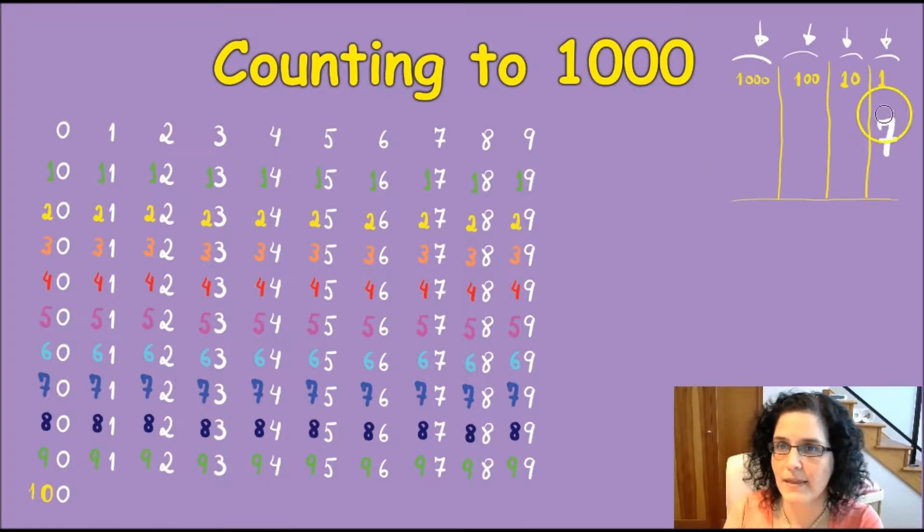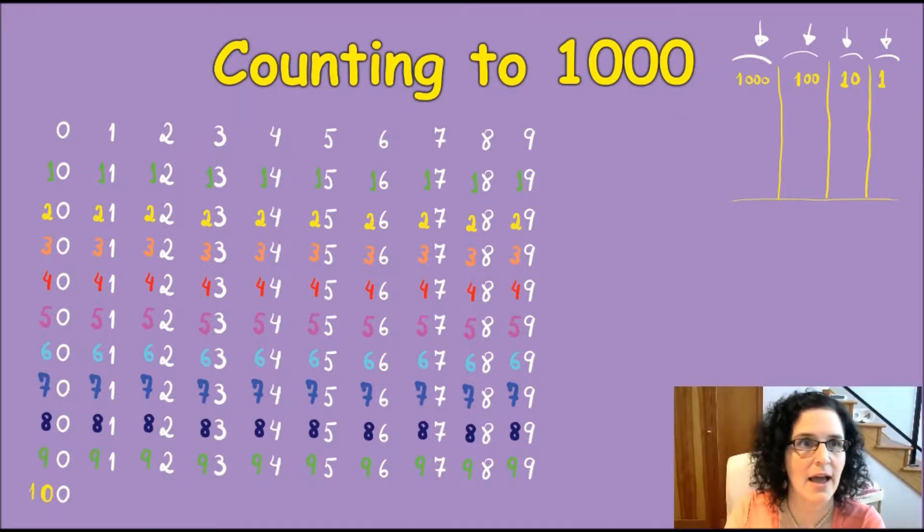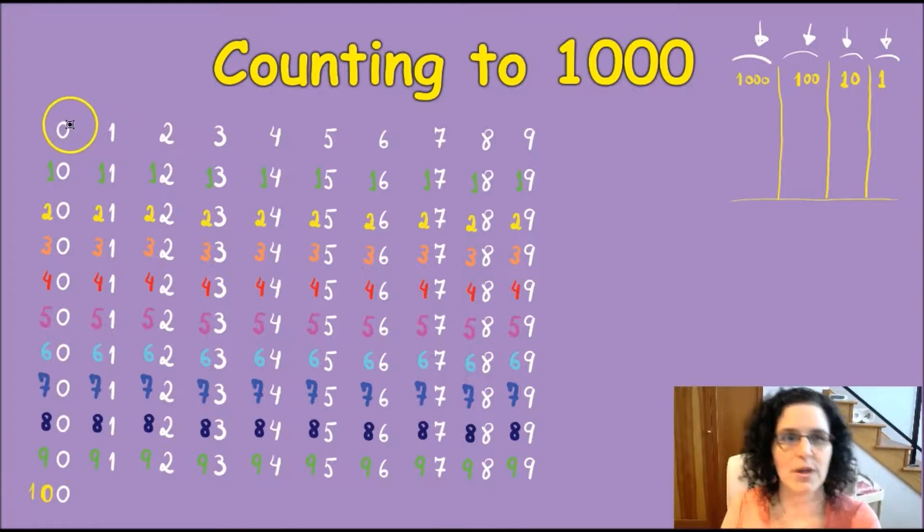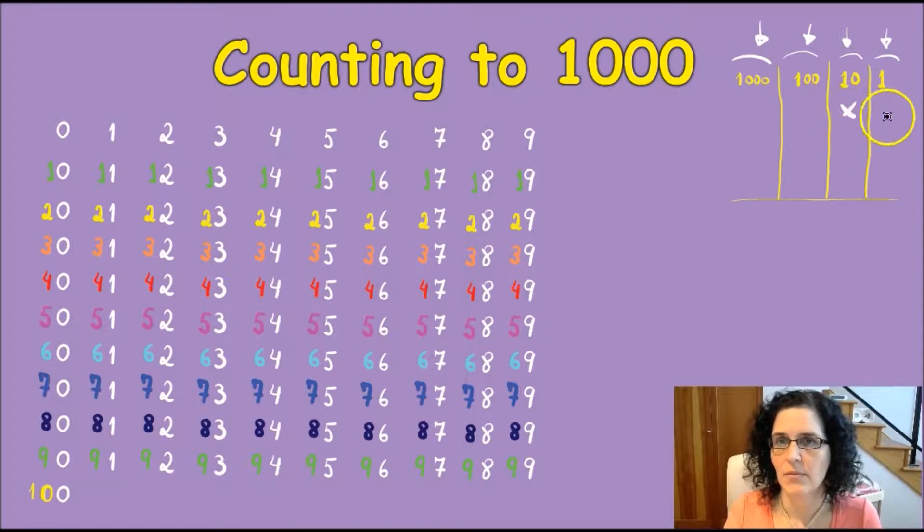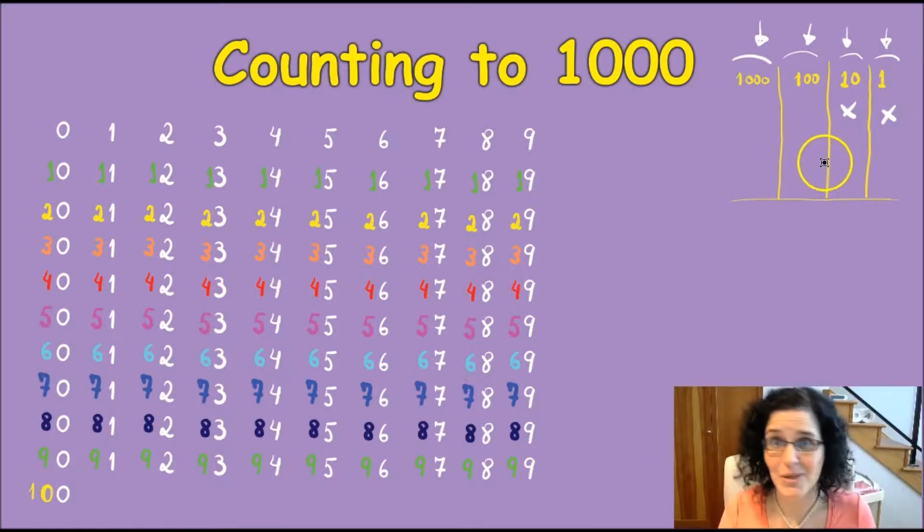But the thing about counting to 100, I have here a table with 0 to 100. It's pretty easy because you're only adding numbers to these two columns, to the tens and to the ones. Because by the time you get to 100, that's your last number. You're not really working with it, but working with this column here, it gets a little trickier.